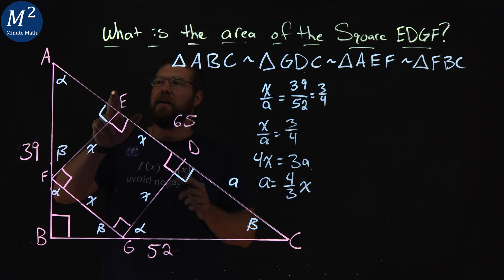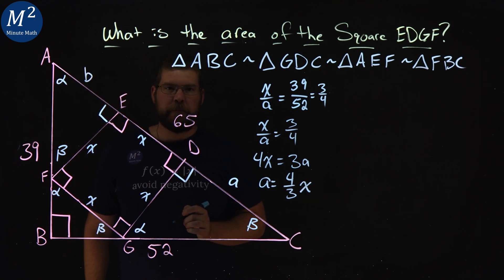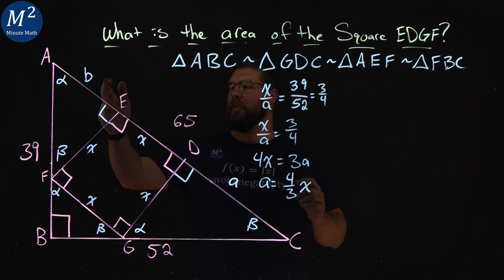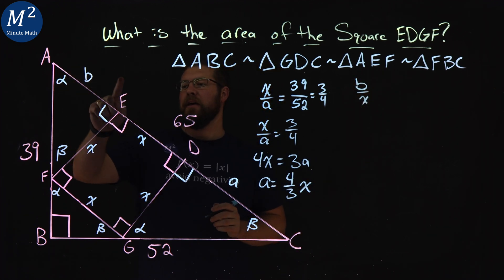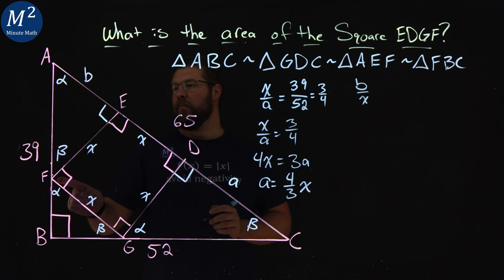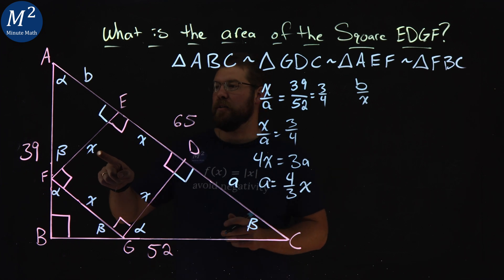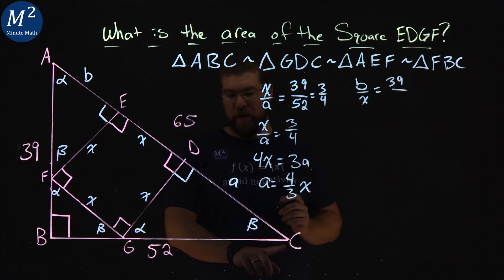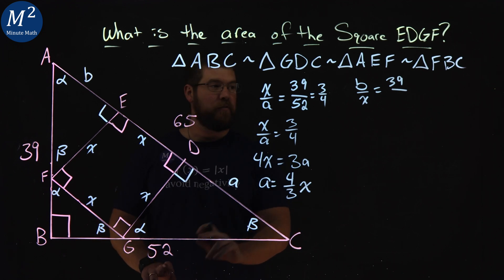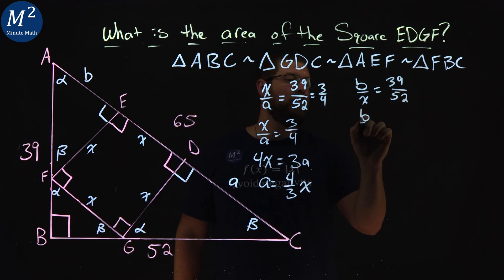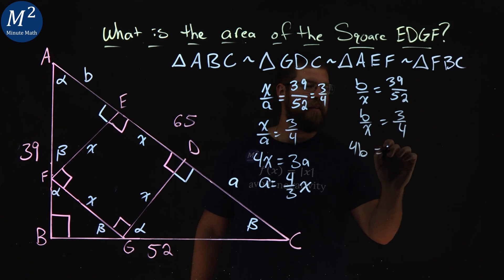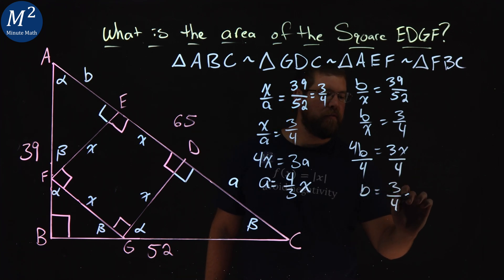So let's do the same thing now, but with side length AE. Let's call that B for opposite of beta. All right, so we'll set up again a proportion here. I have B over X, that triangle AEF, alpha to right angle, right angle to beta. So B over X here. So alpha to right angle is 39 over right angle to beta, which is 52. Again, we said that is equal to three fourths. So B over X equals three fourths. Multiply that out, we have 4B equals 3X. We divide both sides by 4 and B is equal to three fourths of an X value.